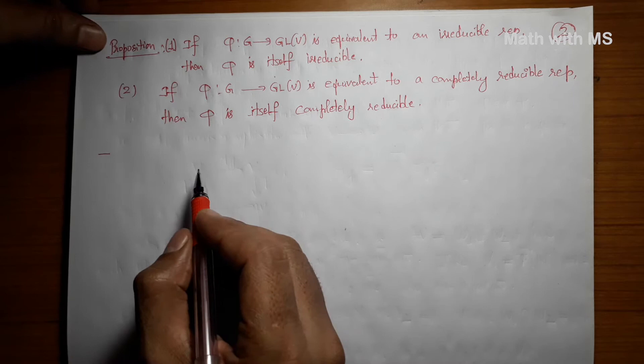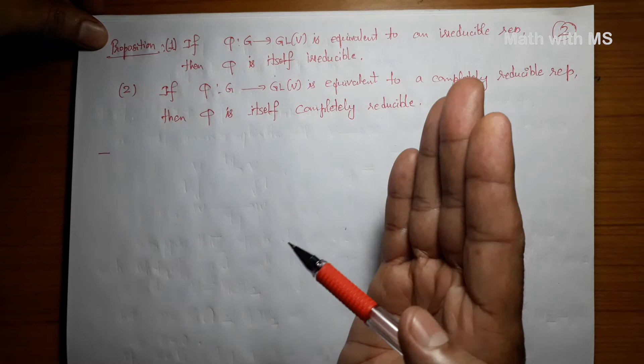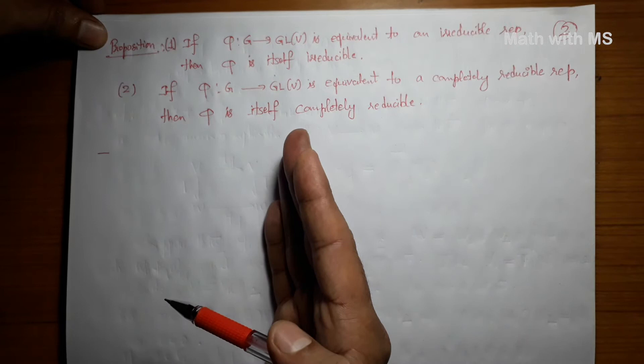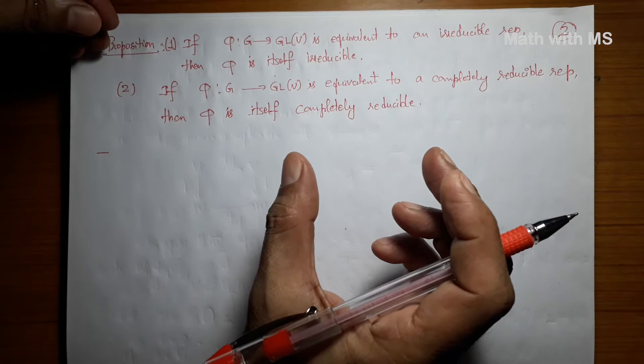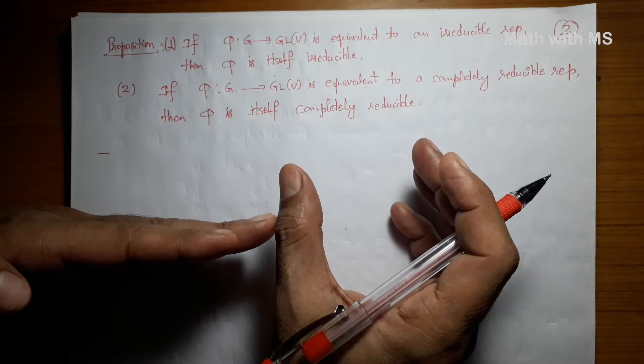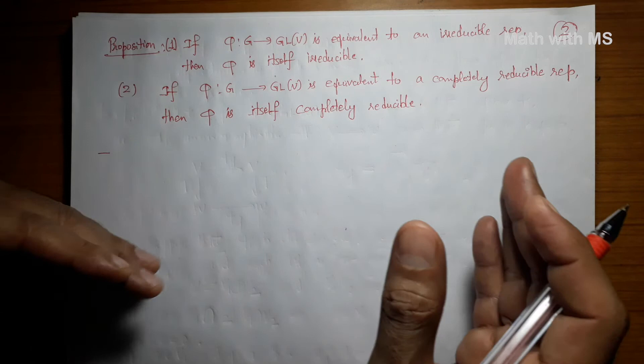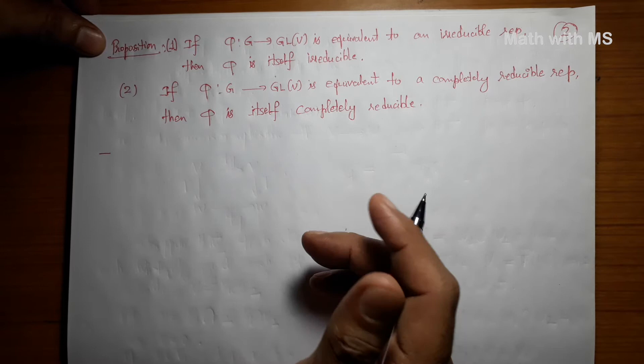I want to show that each representation of a group is equivalent to a representation with the property that whenever it has a proper G-invariant subspace, it is decomposable. If a space has a proper G-invariant subspace, there is no reason a priori why it should have a complementary G-invariant subspace. But if we can show this happens, we are very close to proving that each representation is a direct sum of irreducible representations. To do this, we need to work with inner product spaces.